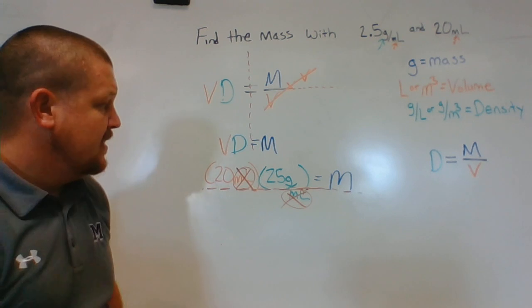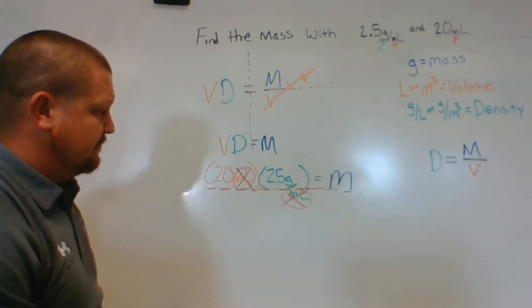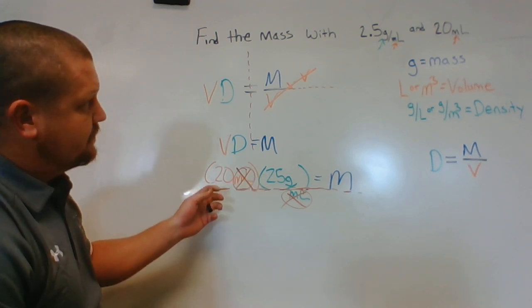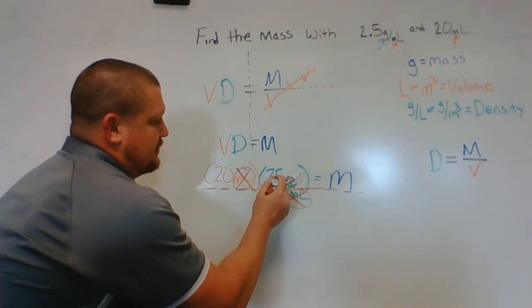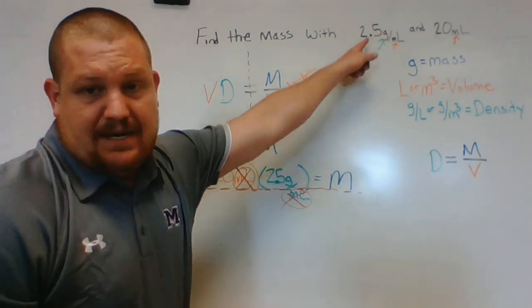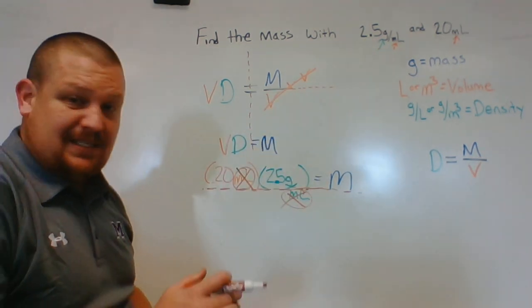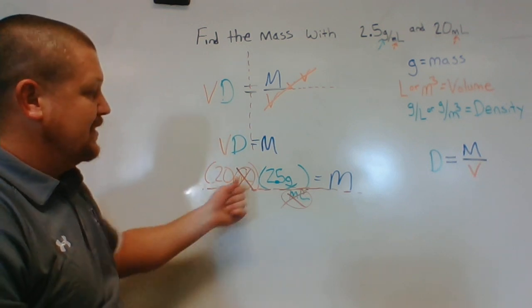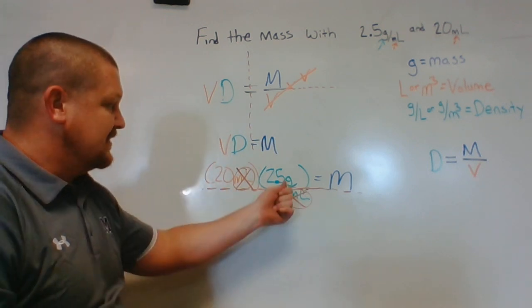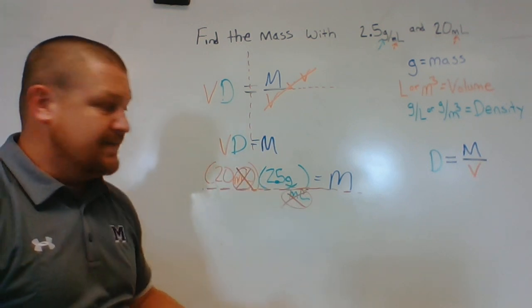Let's get rid of it. Now we have 20 times 2.5 grams. 20 times 2 is 40, plus another half of 20, it's going to give us 50. So we're going to have 50 equals M.